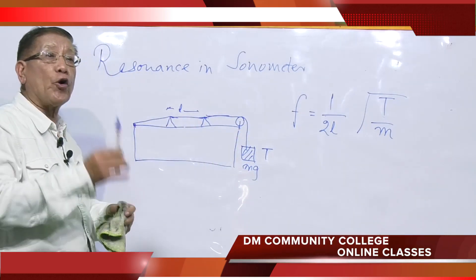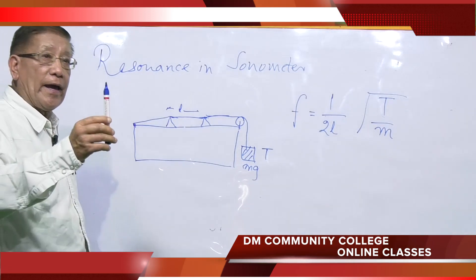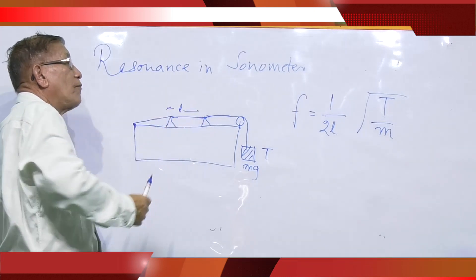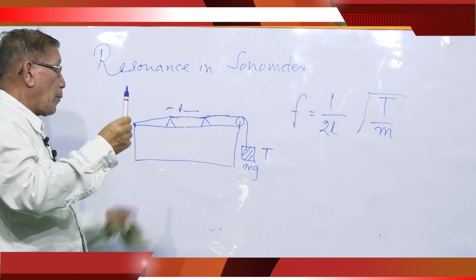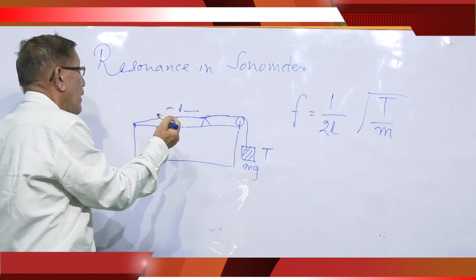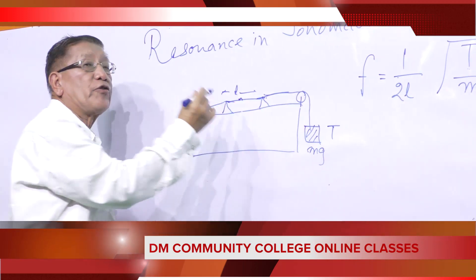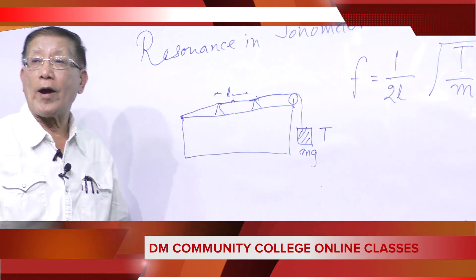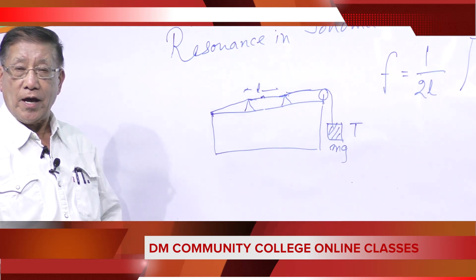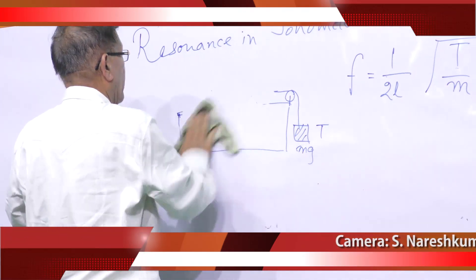This gives the frequency of the stressed string. Now, if we have a sonometer, and if the frequency of the sonometer equals the natural frequency — or the frequency of the sonometer equals the frequency of the tuning fork — we will find that a piece of paper placed on the rider will be thrown off. This you have done in experiments in lower classes.